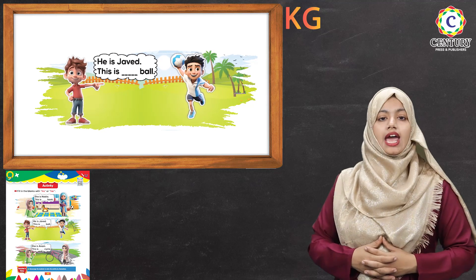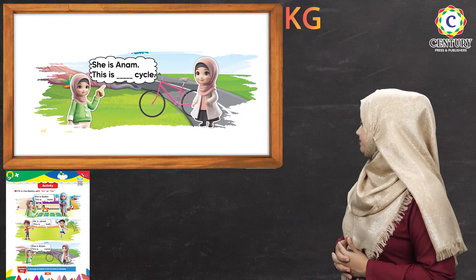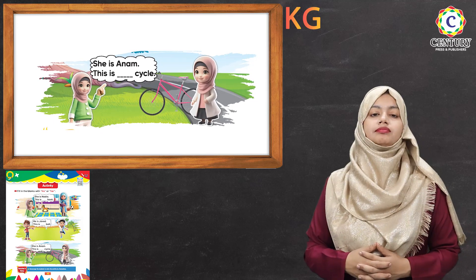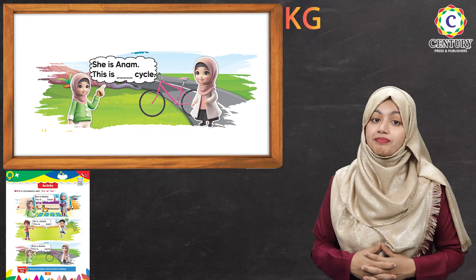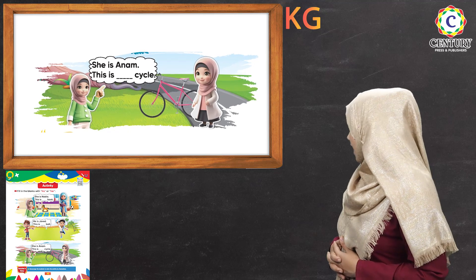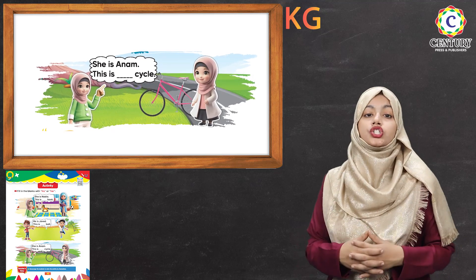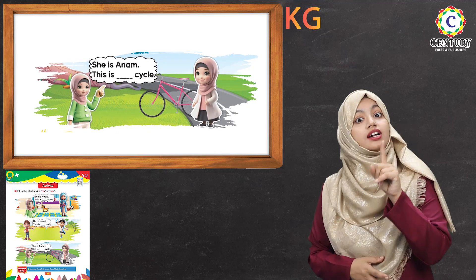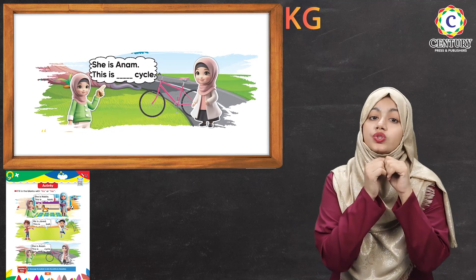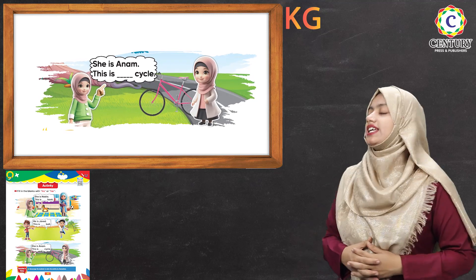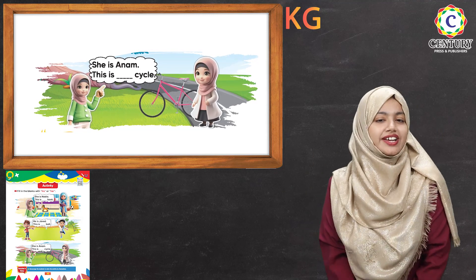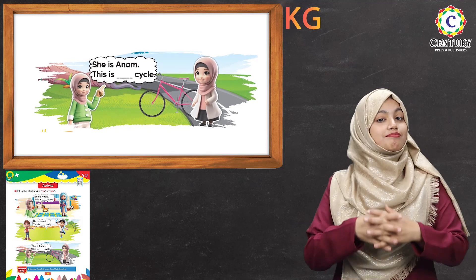And then we have two other girls. She is Anam. What can you see? There is a bicycle. So this is — her! Yes, we are going to use her with girls. So, this is her bicycle. Very good. That's how you can practice using his and her.